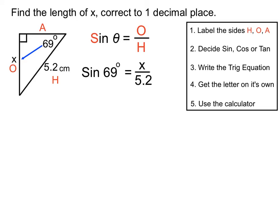Step 4 is to get the letter on its own. To move the 5.2 that's dividing, we do the opposite to both sides — we multiply both sides by 5.2. That cancels out the dividing 5.2 on the right-hand side, leaving us with just the letter x on its own. So x equals 5.2 times sine 69 degrees.